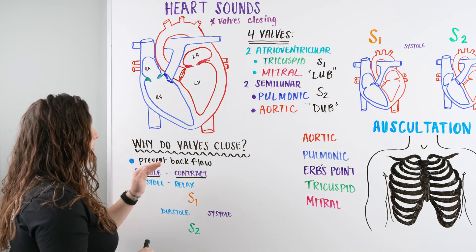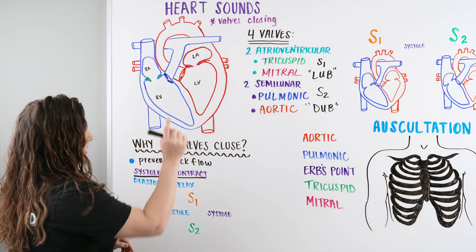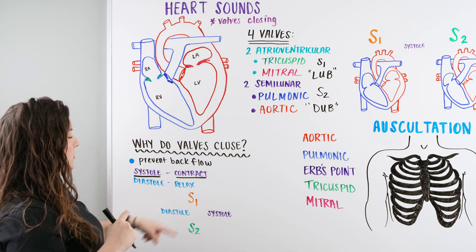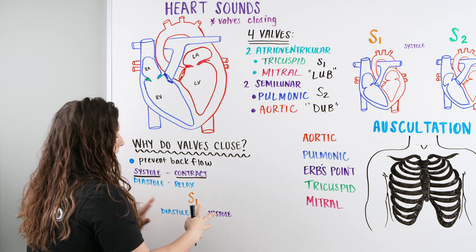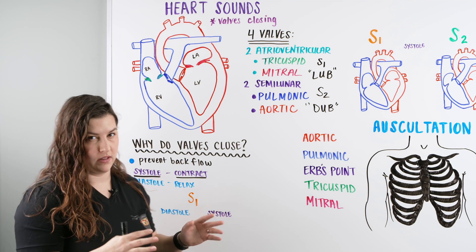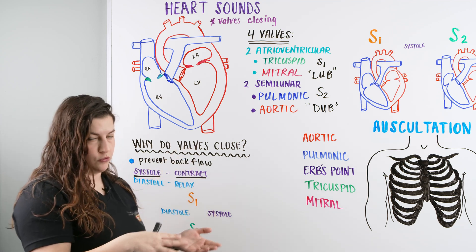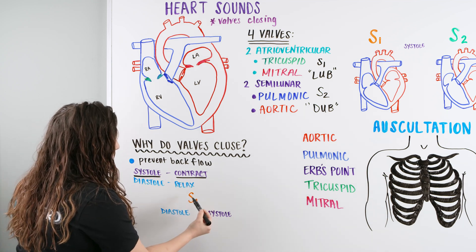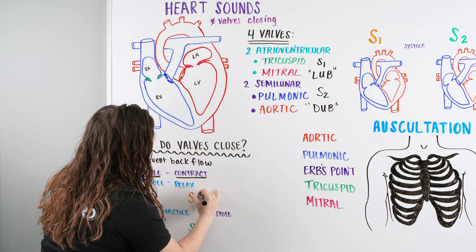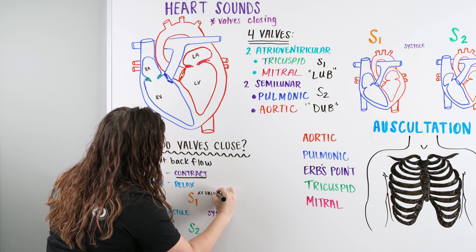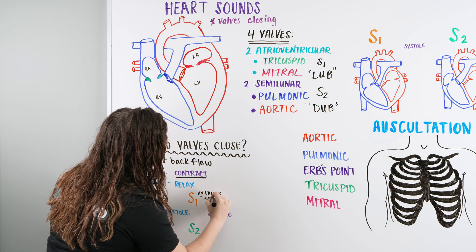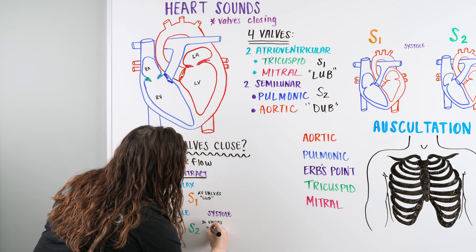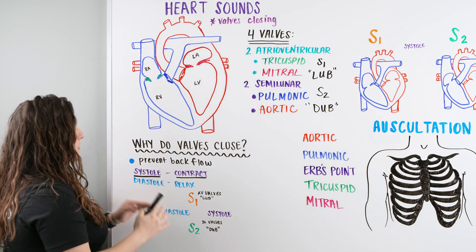So our valves are closing, preventing backflow, and we want to understand how this all works — how S1, S2, systole, and diastole work together. I picture it as a circle. We have S1: our AV valves closing, making our lub sound. Then S2: our semilunar valves closing, making our dub. Blood flows from the right atrium into the right ventricle, filling it. As pressure builds, the tricuspid closes — we hear lub. Blood now needs to go out through the pulmonic.